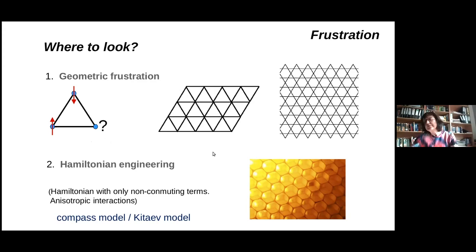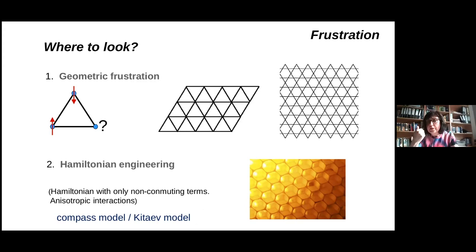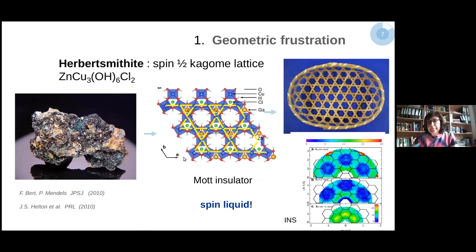A second option is Hamiltonian engineering. How can we get quantum fluctuations in a Hamiltonian description? By considering a Hamiltonian that contains non-commuting spin terms — in other words, by containing anisotropic interactions. This type of model is what I'm going to talk about: the compass model and the Kitaev model. The reason we like this type of Hamiltonian engineering is that even if you start with a mathematical model containing this frustration, what you want is a model you can solve exactly — knowing exactly which is the ground state and excitations — and then try to find a realization of this model in nature.